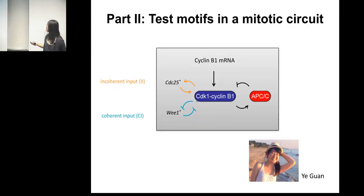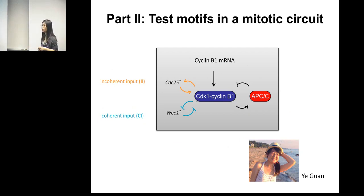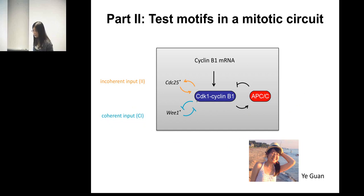The ideal experimental system is the cell cycle. As I introduced at the beginning, CDC25 forms a double positive feedback and Wee1 forms a double negative feedback. These also form an incoherent input with the APC regulation and a coherent input with APC regulation. This makes it the ideal system to test our computational predictions, because we can design experiments using recombinant proteins or drugs to compromise the double positive or double negative feedback and then score for oscillatory behavior.